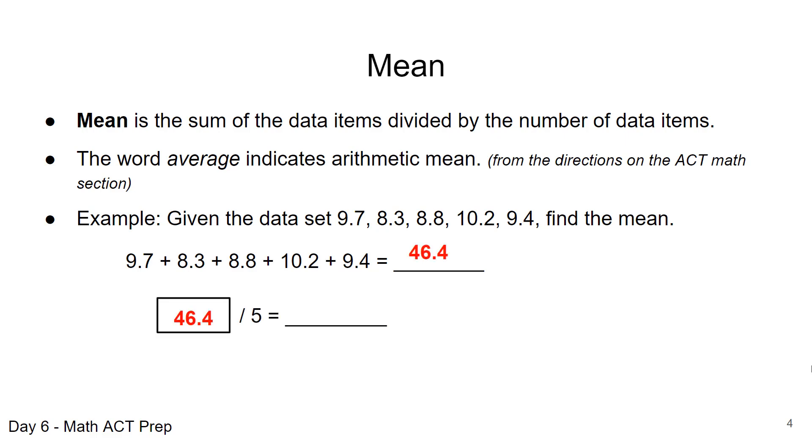Take that 46.4 and divide by 5, that's the number of data items, and that equals 9.28. This is something you could do by hand or quickly on your calculator. This is the basic setup of how you find the mean or average of data items.